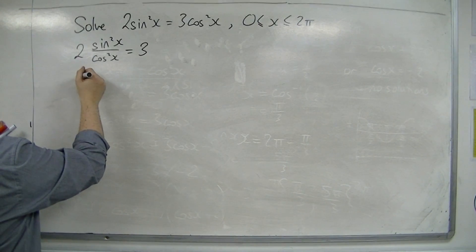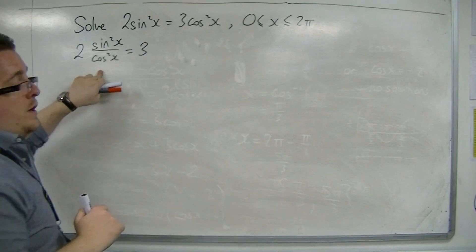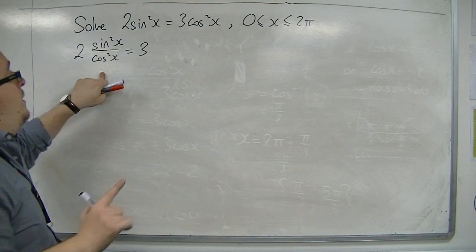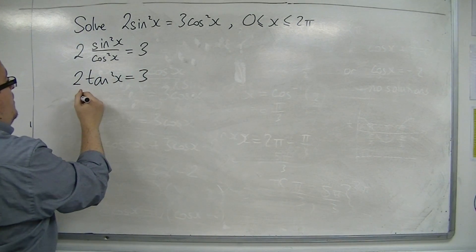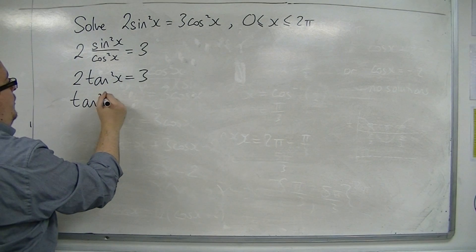First of all, notice that sine squared over cos squared is tan squared. So that's 2 tan squared x equals 3. Then divide both sides by 2.